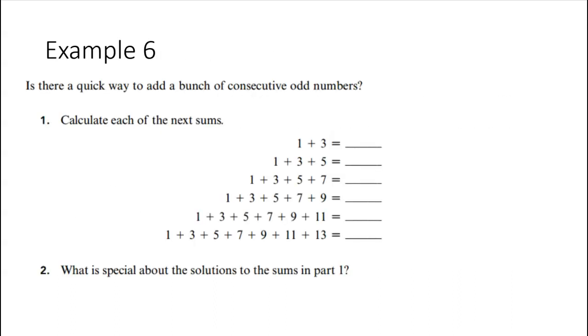It's okay. Play the videos again and again as much as you need to to make sense of these problems. So let's take a look. Is there a quick way to add a bunch of consecutive, so in a row, odd numbers?